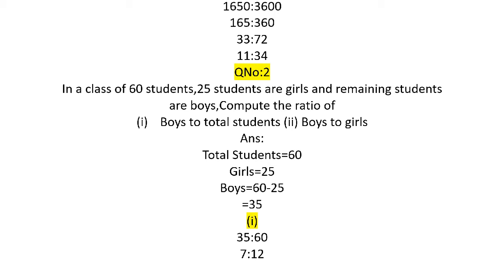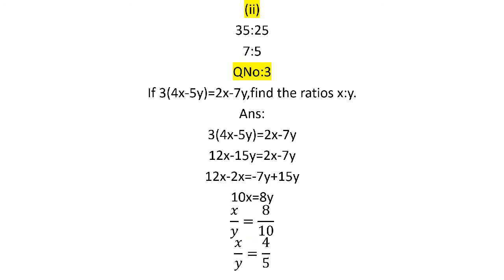Question number 2 میں 60 students کی class میں 25 girls ہیں اور باقی boys ہیں۔ Total 60، girls 25، تو boys = 60 - 25 = 35۔ Part a: boys to total students = 35:60، 5 کے table سے cut کریں تو 7:12۔ Part b: boys to girls = 35:25، 5 کے table سے cut کریں تو 7:5۔